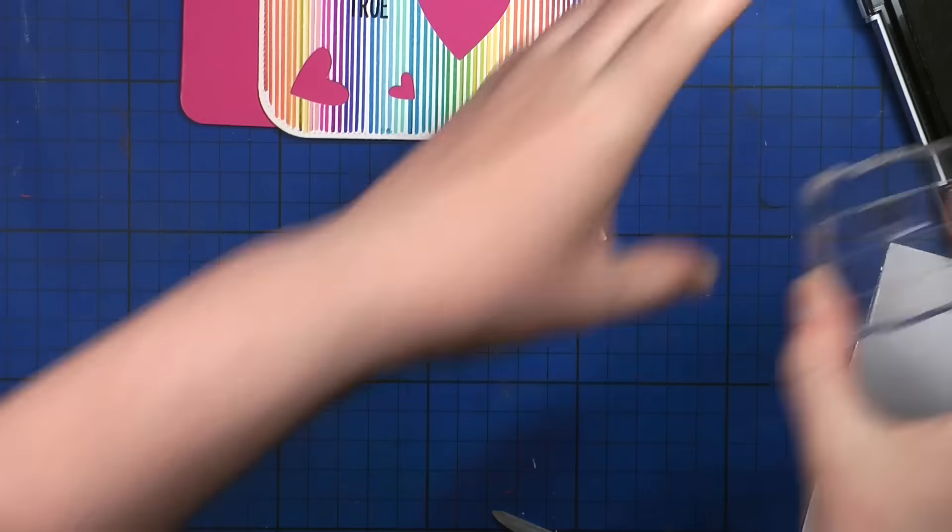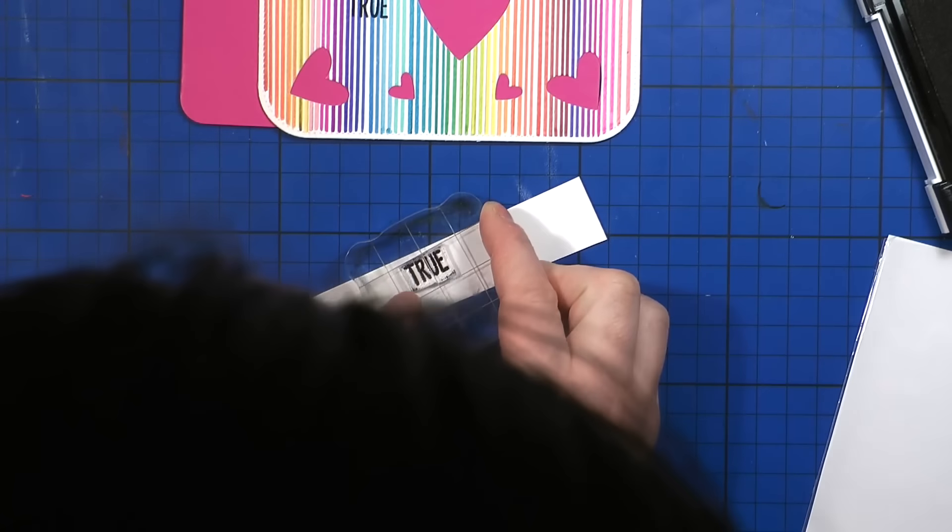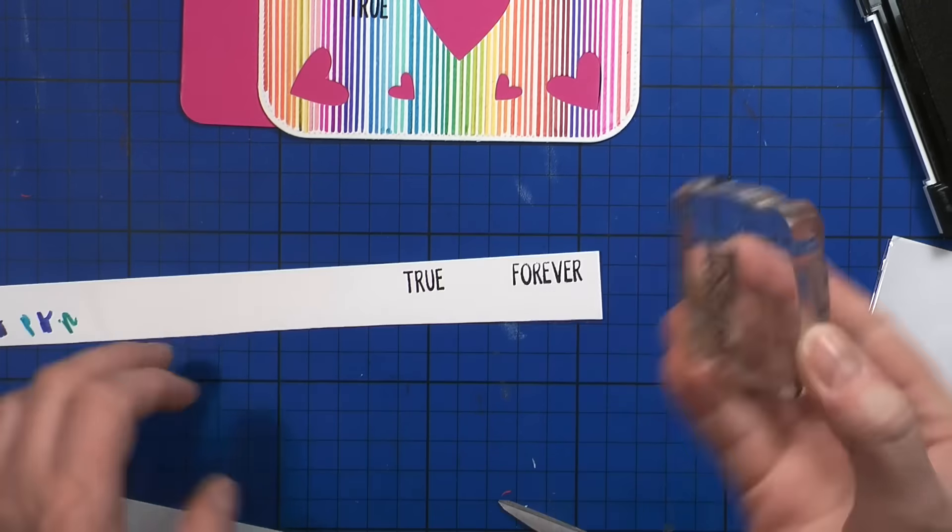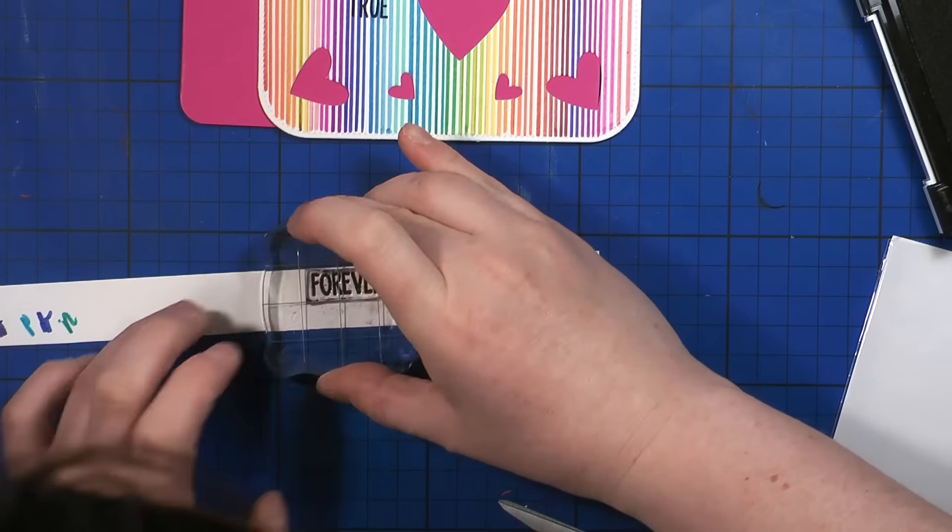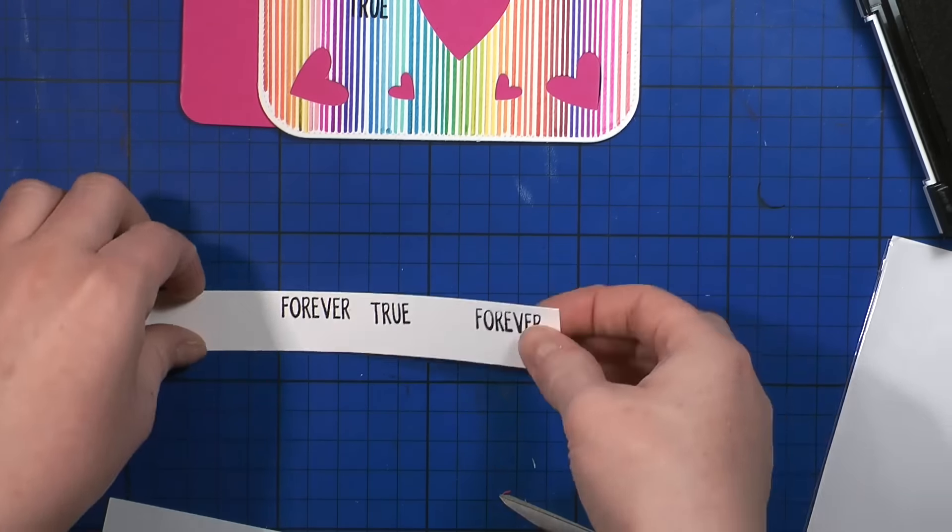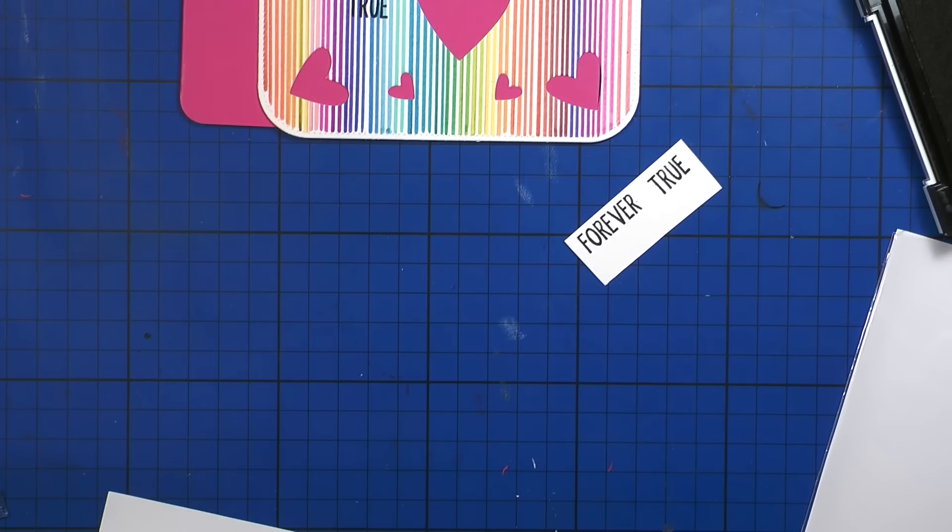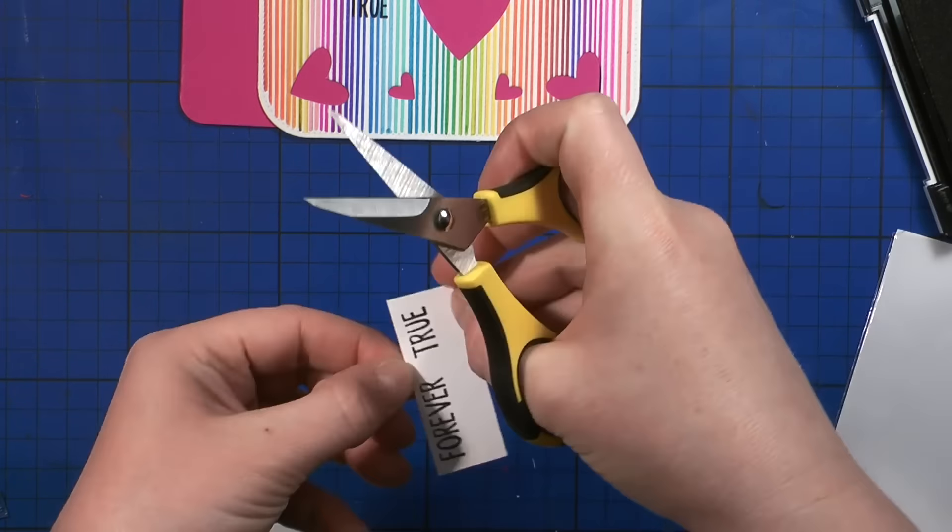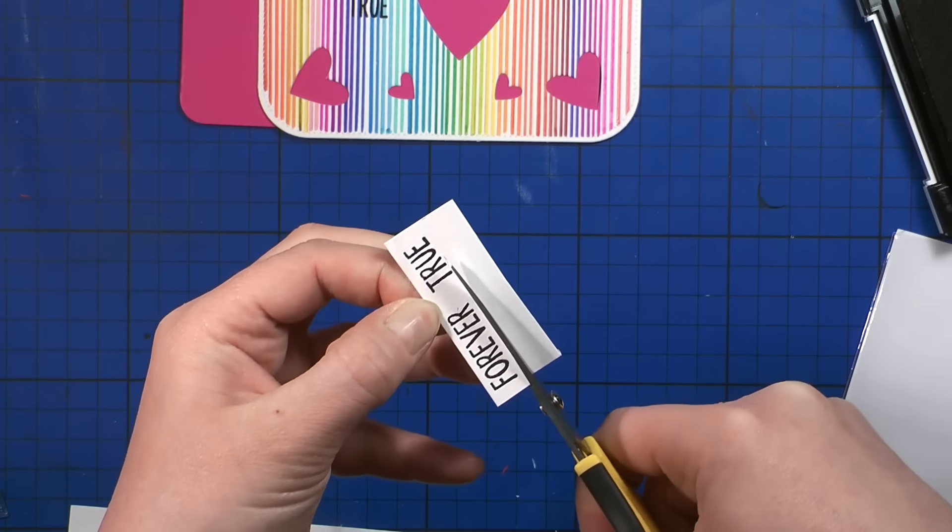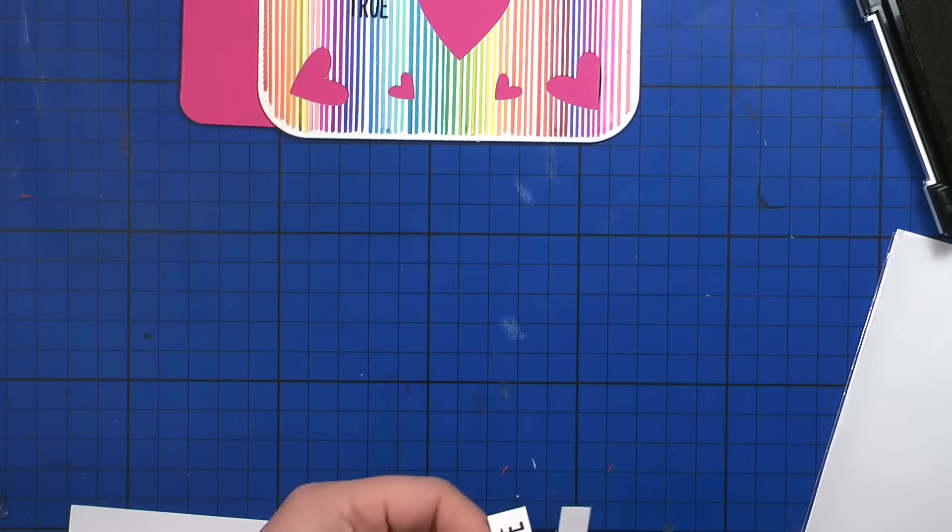And I stamped the True, but I really didn't like how it almost was invisible on these lines. So I'm going to stamp True and Forever on a piece of smooth white cardstock. It's also a watercolor cardstock, the same as the card base, so that the white matches. And I'm going to cut it out using my scissors. I'm going to pop them on my double-sided foam tape and adhere them to cover up my mistake.